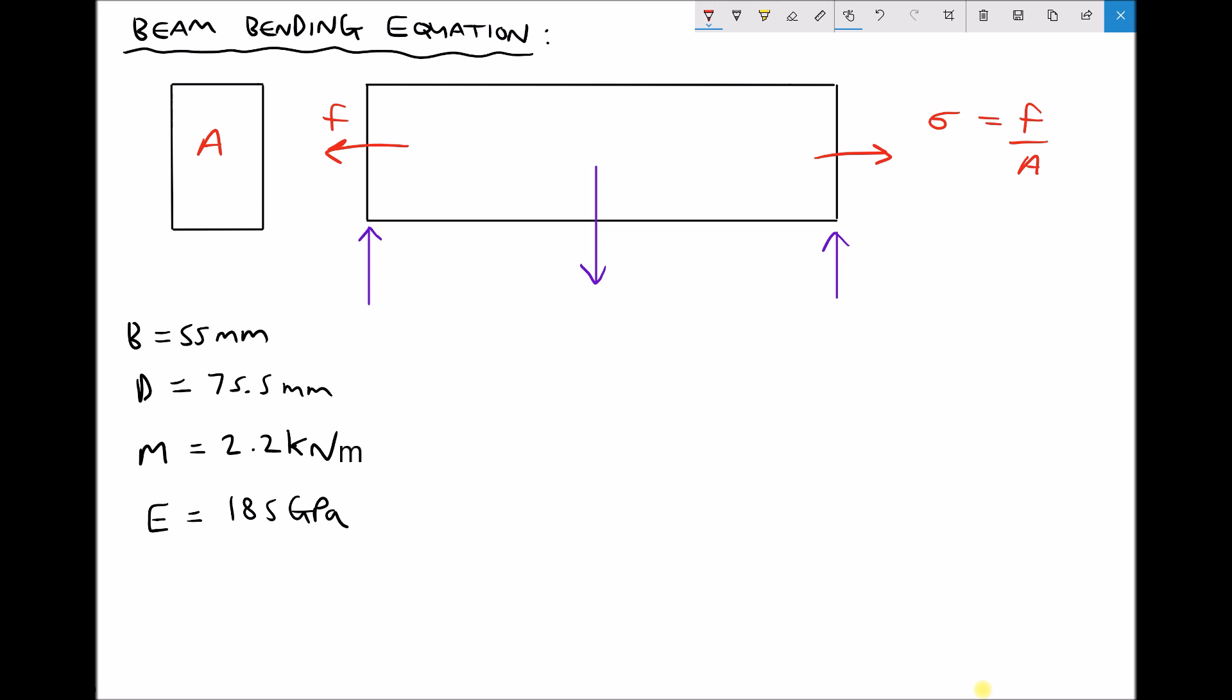Now the reason that formula can be used when the beam is placed under direct loading of tension or compression is because that applied force is going to be evenly distributed across the area of the beam. But that won't be the case when we place the beam under bending.